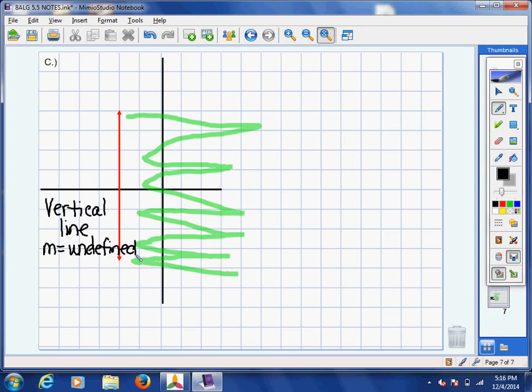Now, as you may recall from the last chapter in chapter four, vertical lines, they never cross the y-axis. So there's no y term. So it's always going to be x equaling some number. So look where it crosses the x-axis. What is that number?